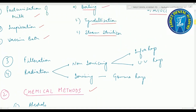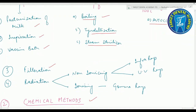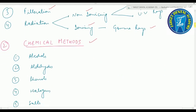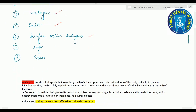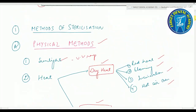Third method is filtration. Fourth is radiation, with two types: non-ionizing radiation — consisting of infrared rays and ultraviolet rays — and ionizing radiation, which consists of gamma rays. Chemical methods used for sterilization and disinfection include alcohols, aldehydes, phenols, halogens, salts, surface active agents, dyes, and gases.